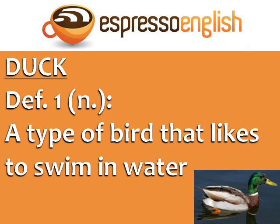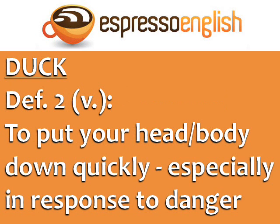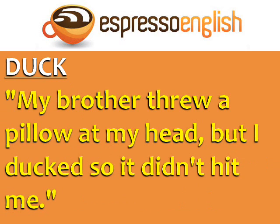Duck. Definition 1: Noun – a type of bird that likes to swim in water. Example: The kids like to feed the ducks in the pond at the park. Definition 2: Verb – to put your head or body down quickly, especially in response to danger. Example: My brother threw a pillow at my head, but I ducked so it didn't hit me.